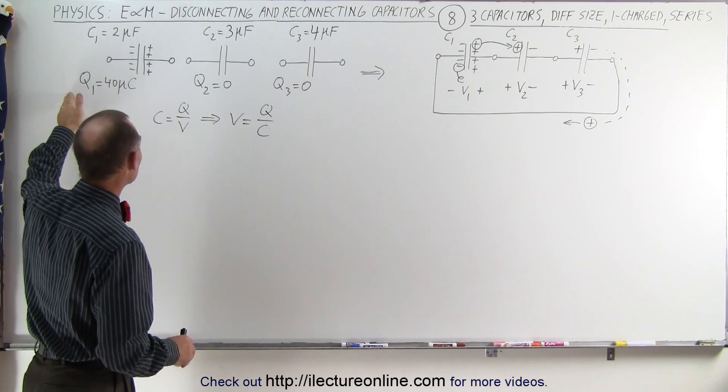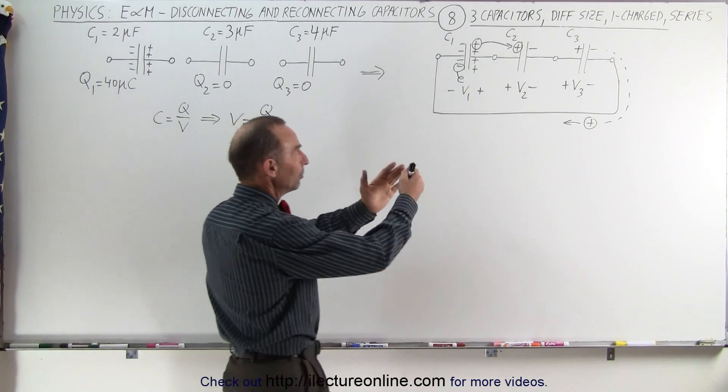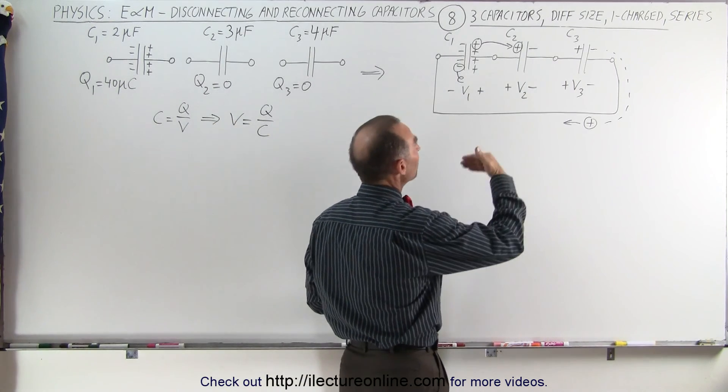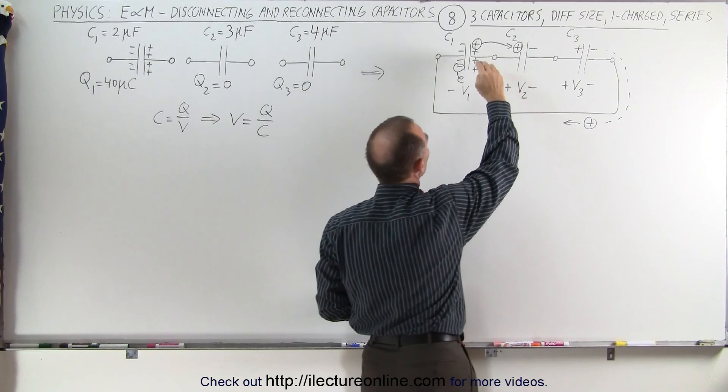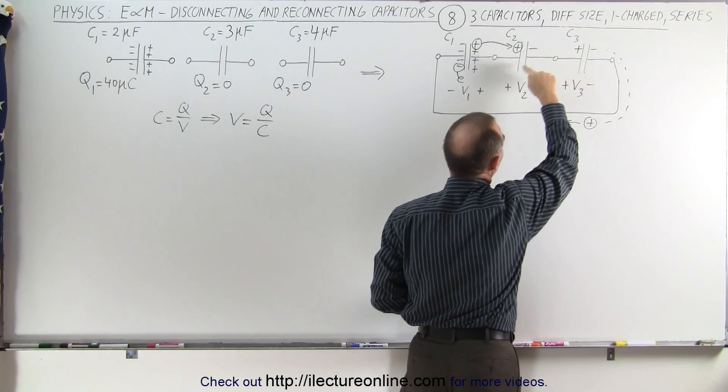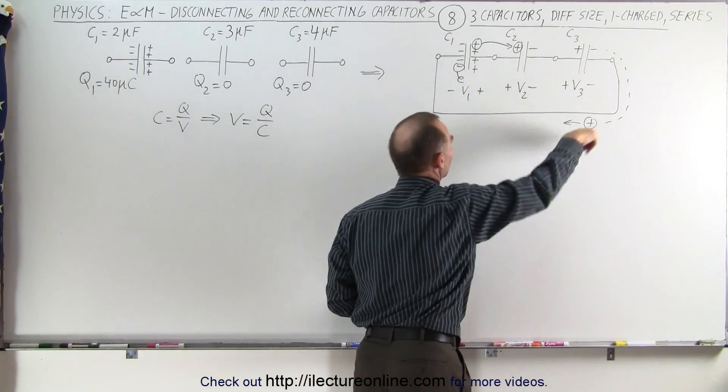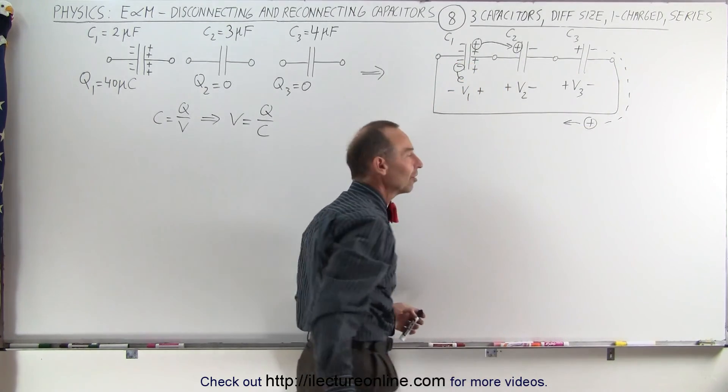We still only have one of them being charged, the other one has zero charge initially. We connect them, just like before, and the same principle will take place that some of the charge on the first capacitor will leak onto the second capacitor, which then of course has kind of a cascading effect onto the third capacitor.